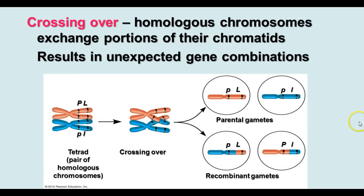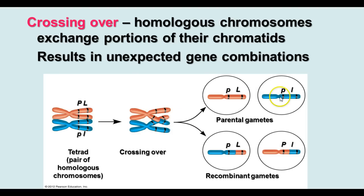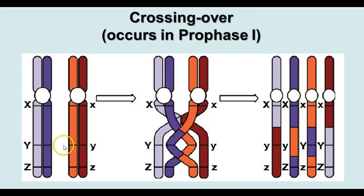One thing that happens during meiosis, especially in prophase I, is crossing over. When the homologous chromosomes are lined up in the tetrad, parts of non-sister chromatids cross over each other and exchange portions. This is important in sexual reproduction because it results in different gene combinations. Part of one chromatid breaks off and attaches to the other and vice versa, so at the end of meiosis you have four genetically different daughter cells rather than identical ones as in mitosis, resulting in a lot of mixing of gene combinations.